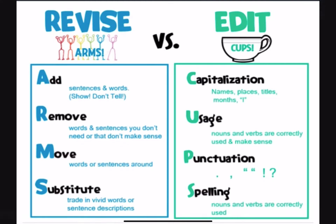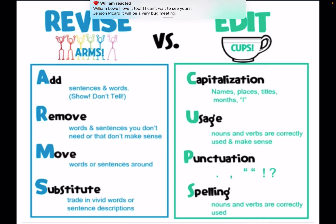Something really useful to look at is the ARMS and CUPS editing method, so I'm going to show you what that looks like. There's a little poster here showing 'Revise' and 'Edit' — we revise using ARMS and we edit using CUPS. When we revise, we need to Add sentences and words — making sure the words we're using are showing, not telling, so they're descriptive and vivid. We Remove any words or sentences we don't need, that don't make sense, or that repeat the same thing. We Move words and sentences around so our writing sounds really professional. And we Substitute — trading in boring words for vivid, descriptive ones.